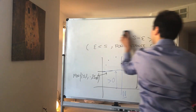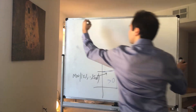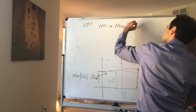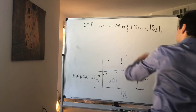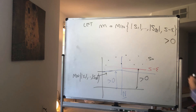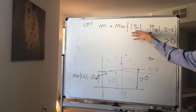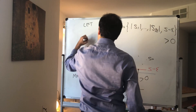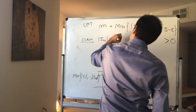This is the crux of the proof. Let little m be the minimum of all those values: absolute value of S_1, dot dot dot, absolute value of S_N, and also s minus epsilon. We know s minus epsilon is positive by construction, and each of those absolute values is positive since the sequence is non-zero. And we claim that the absolute value of S_n is greater than or equal to little m for all n.